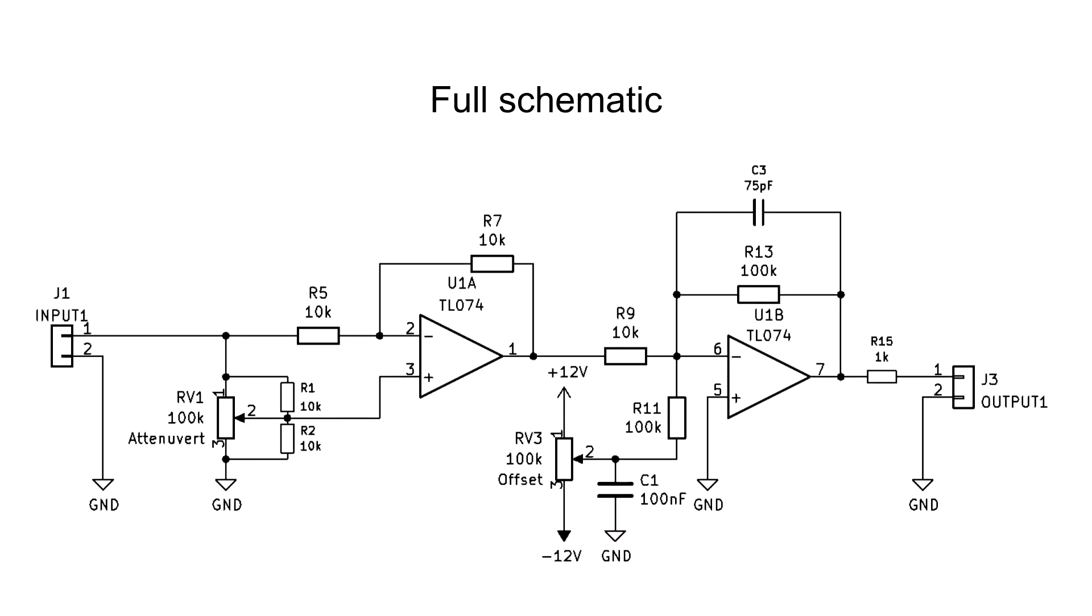The complete schematic looks as follows. There are some added components visible. Resistors R1 and R2 around the attenuverter potentiometer tapers the response and feel of the potentiometer, so it's easier to dial in the 12 o'clock position, which as seen previously, leads to a gain of 0.